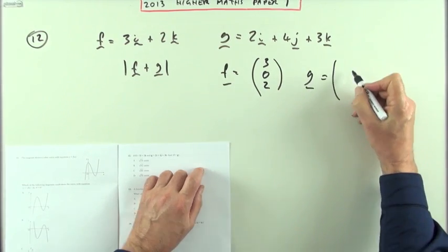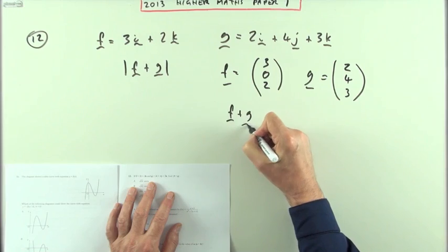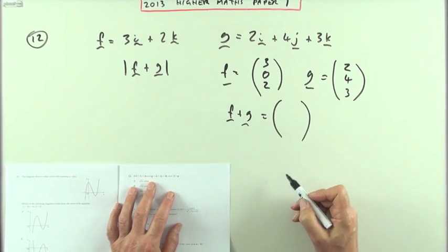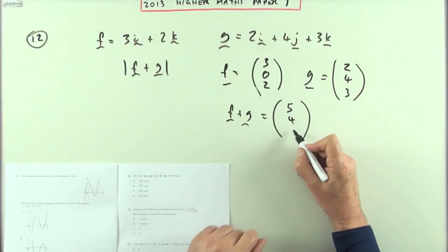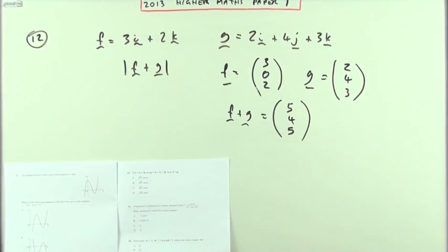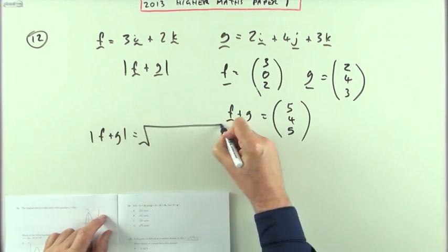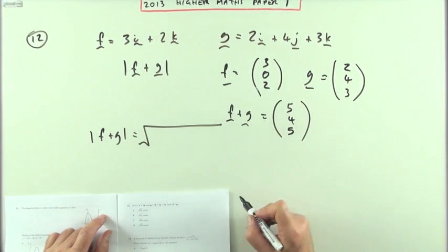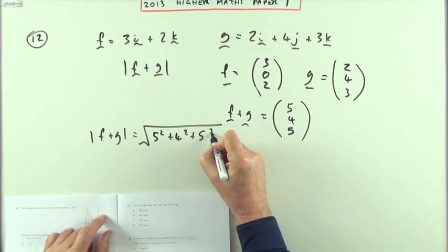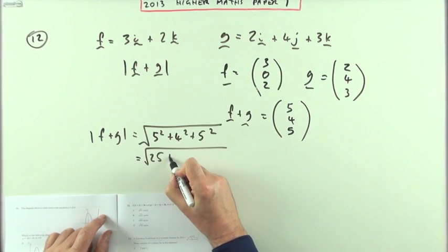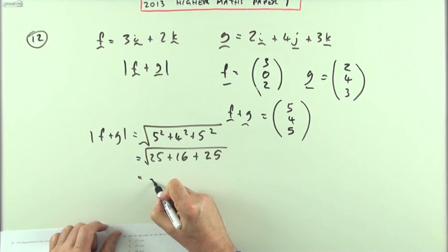If I want f plus g, it's just going to be add the two together. So it'll be three and two is five, nothing and four is four, and two and three is five again. To get the length, the magnitude of that vector, it'll be the square root of the squares of the components, Pythagoras in three dimensions. It'll be the five squared, the four squared, and the five squared. That's the square root of 25, 16, and 25.